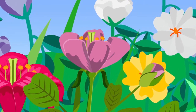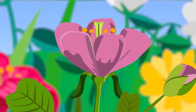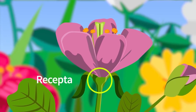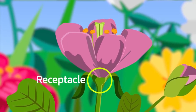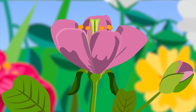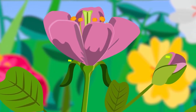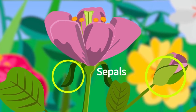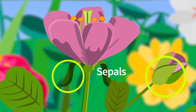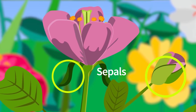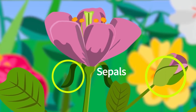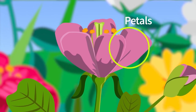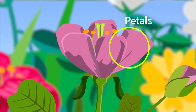Now let us dissect this flower to investigate its different parts. If you look at the external side of the flower, you can see the receptacle, which attaches the flower to the stem. Before the flower blooms, there is an outer layer protecting it. This layer is made up of sepals — leaf-like structures, usually green, but in some flowers they can look very much like petals.